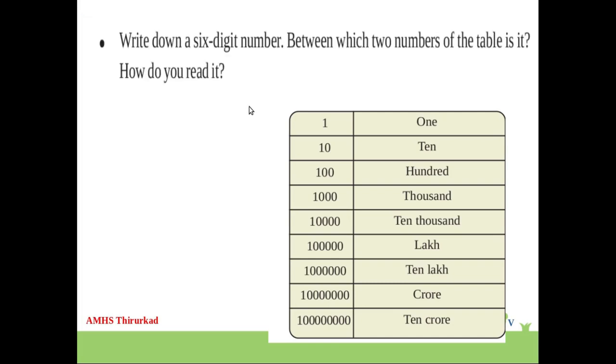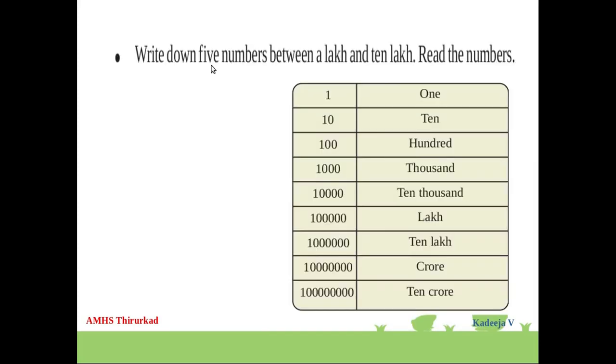The next question is write down a 6 digits number between which 2 numbers of this table is it. The next question is write down 5 numbers between 100,000 and 10,000. Read the numbers. Answer the following.